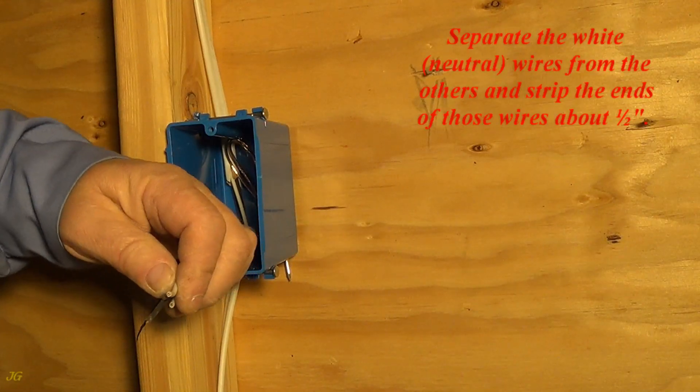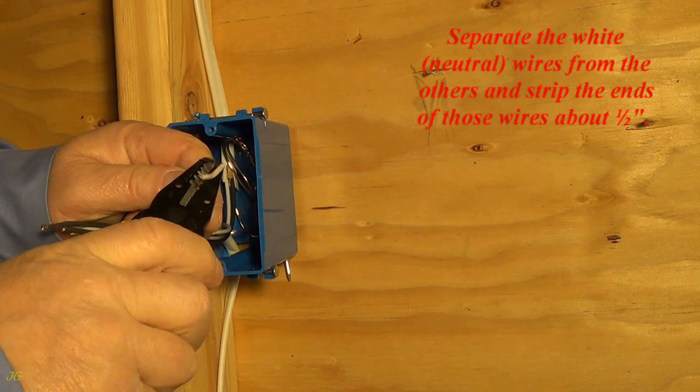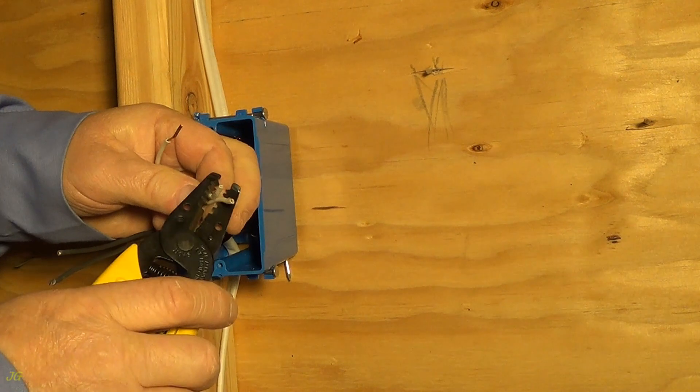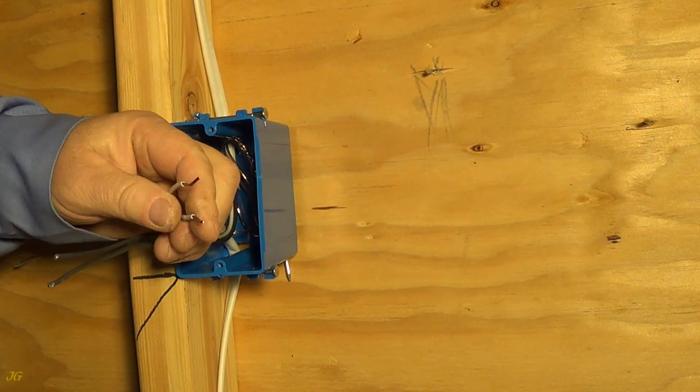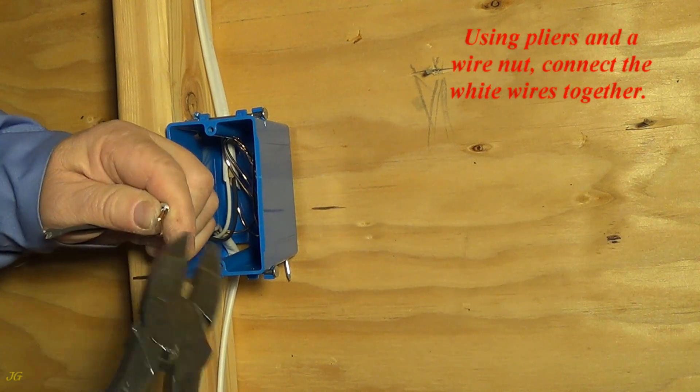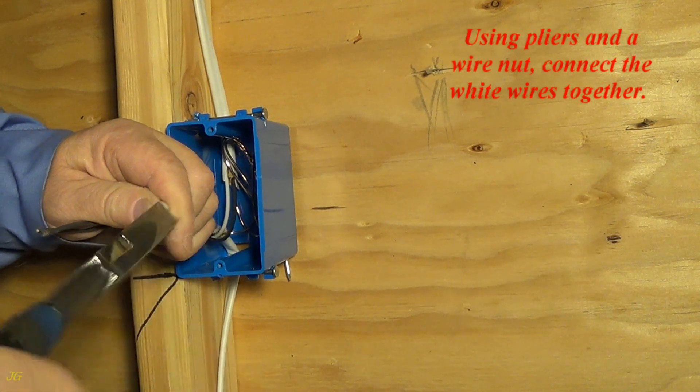Separate the white neutral wires from the others and strip the ends of those wires about one half inch. Using pliers and a wire nut, connect the white wires together.